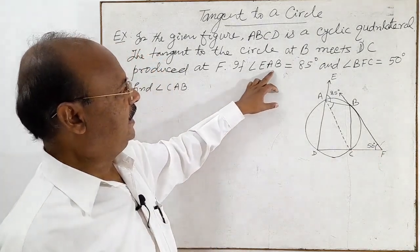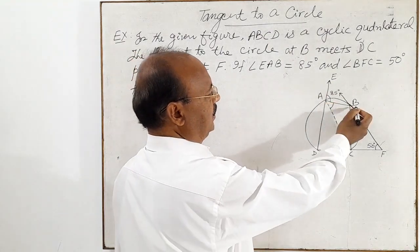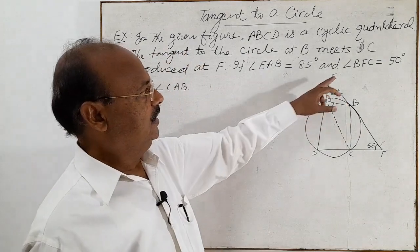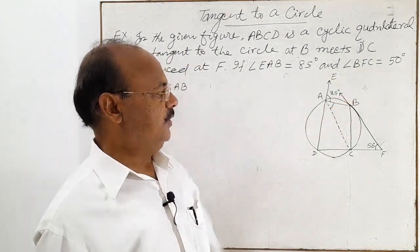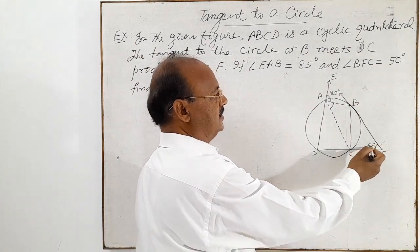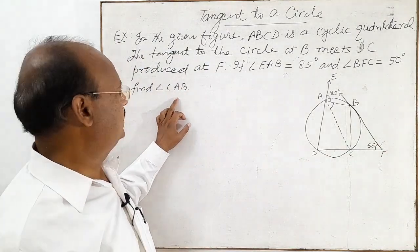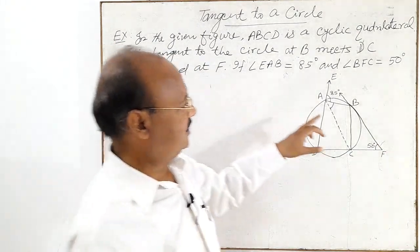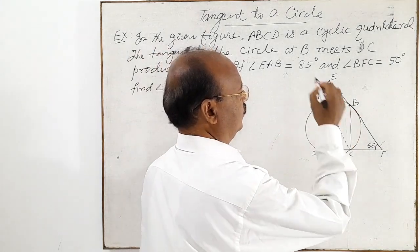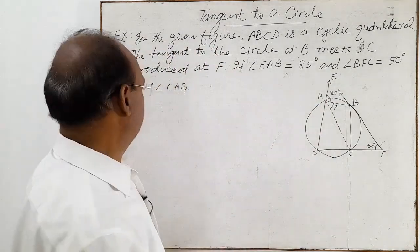Angle EAB is 85 degrees and angle BFC is 50 degrees. We have to find out angle CAB. So now let us see the solution of this problem.